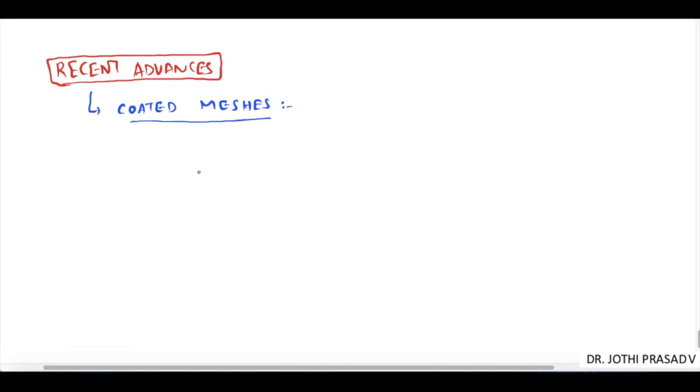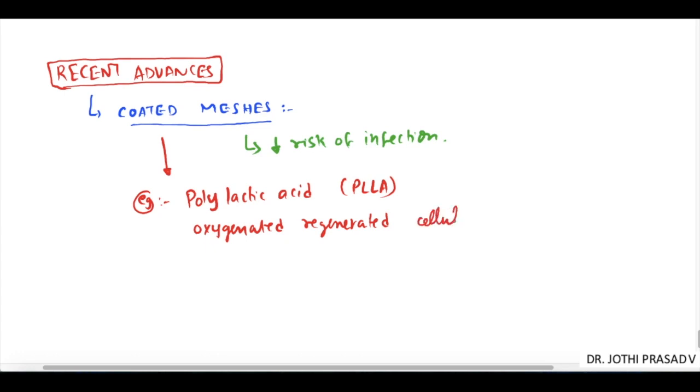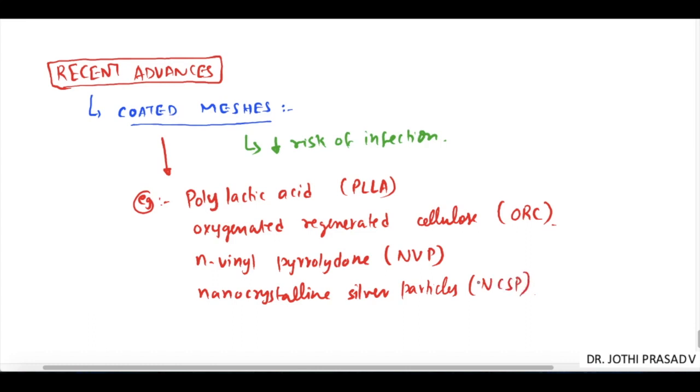Recent advances include coated meshes, produced with the aim of minimizing the risk of infection. These are bi-layered composite meshes, with examples including poly-lactic acid or PLLA, oxygenated regenerated cellulose or ORC, N-vinyl pyrrolidone or NVP, and nano-crystalline silver particles or NCSP. These materials are coated on meshes to reduce infection risk.